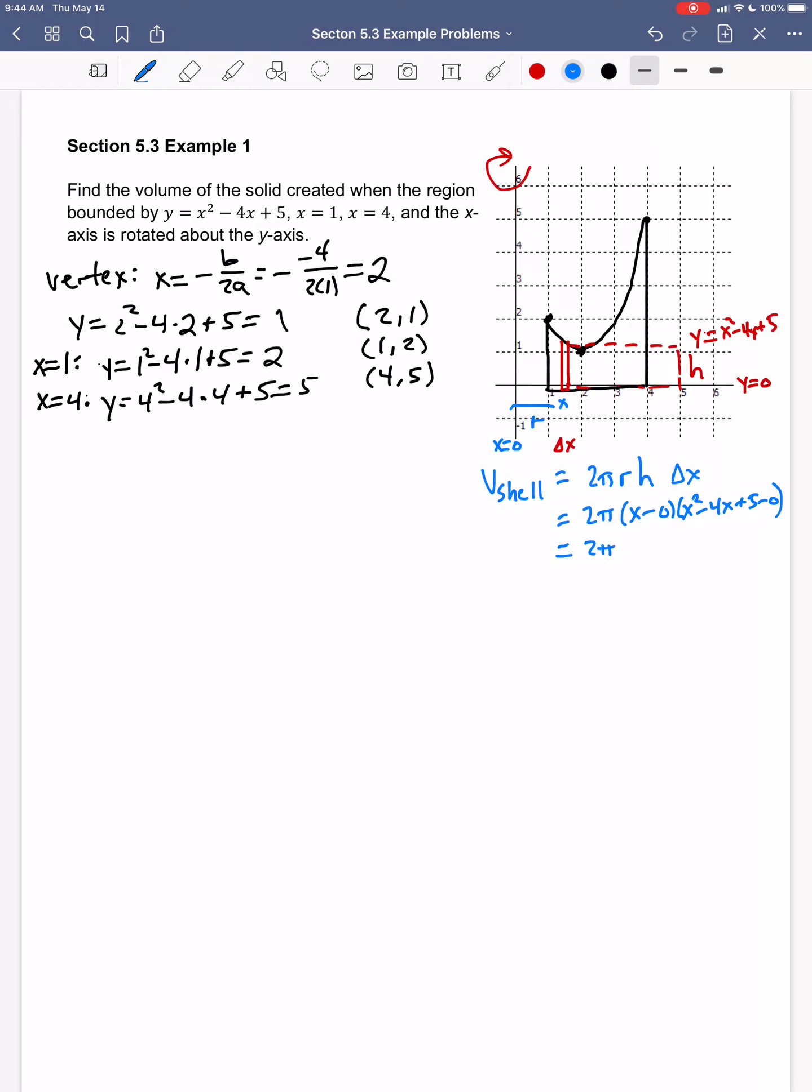And so I get 2 pi x times x squared minus 4x plus 5 delta x, or that would be 2 pi, multiply the x in, x to the third minus 4x squared plus 5x delta x.